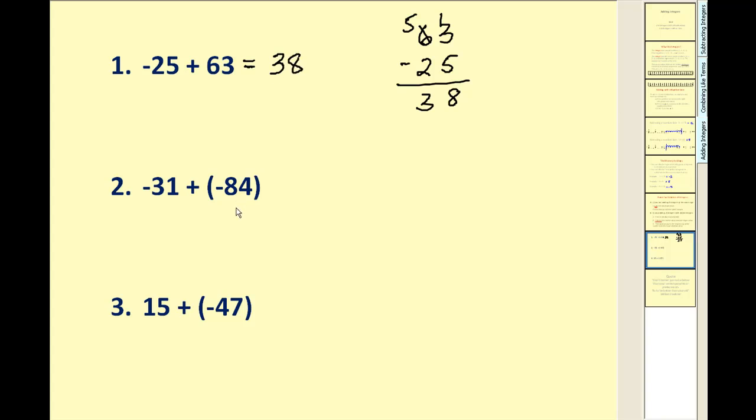And in fact, it will be positive thirty-eight. On this next example, we have a loss of thirty-one dollars. And then another loss of eighty-four dollars. Again, we can probably figure out that our answer has to be negative. But since they're the same sign, we take the absolute value of them. And this time we add them. Again, we already determined our sum had to be negative. So our sum is negative one hundred fifteen.